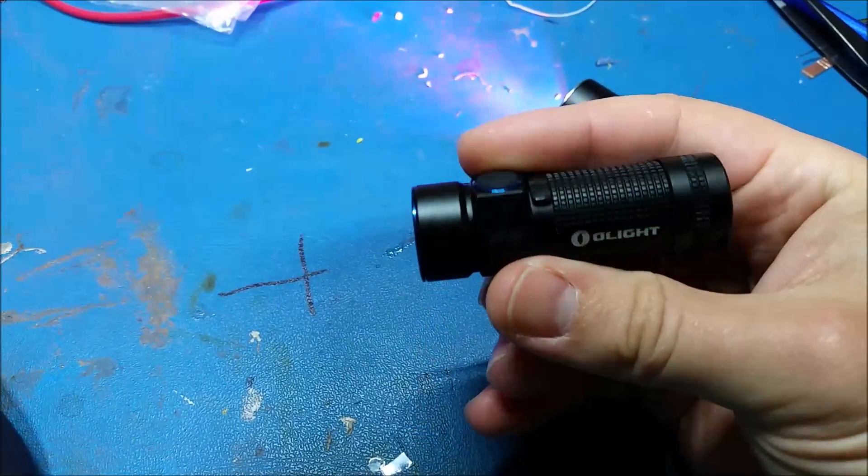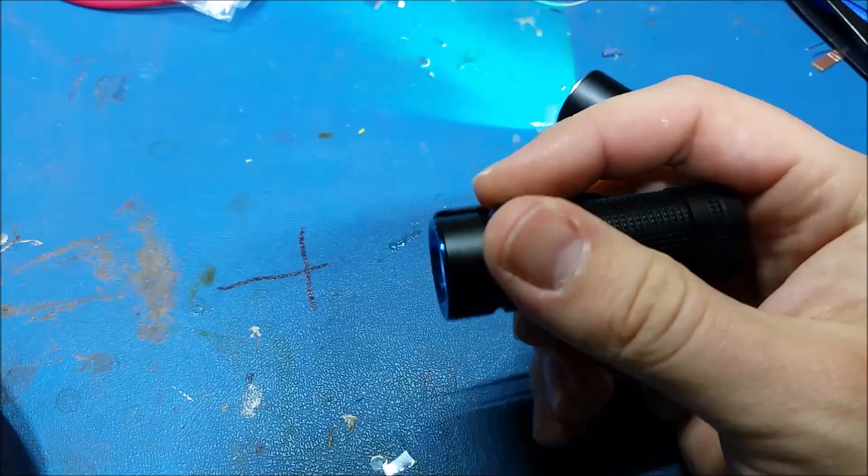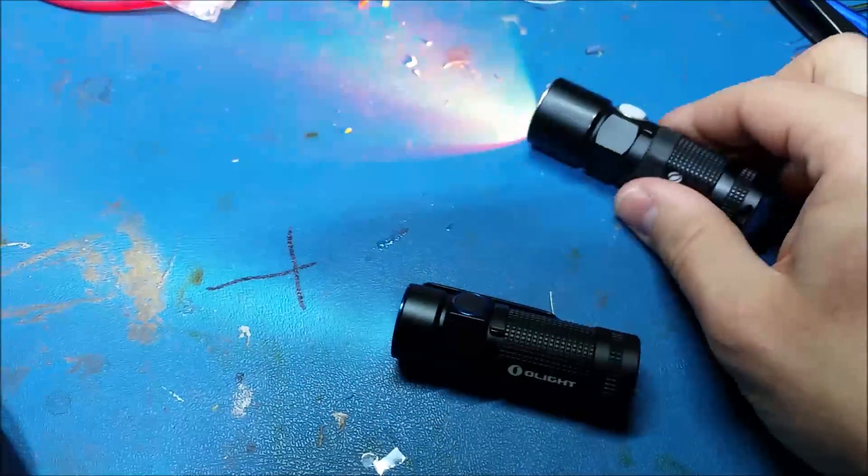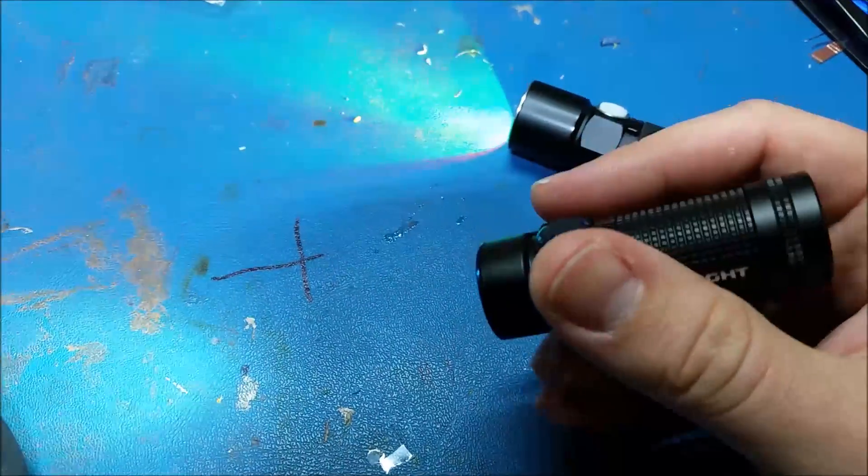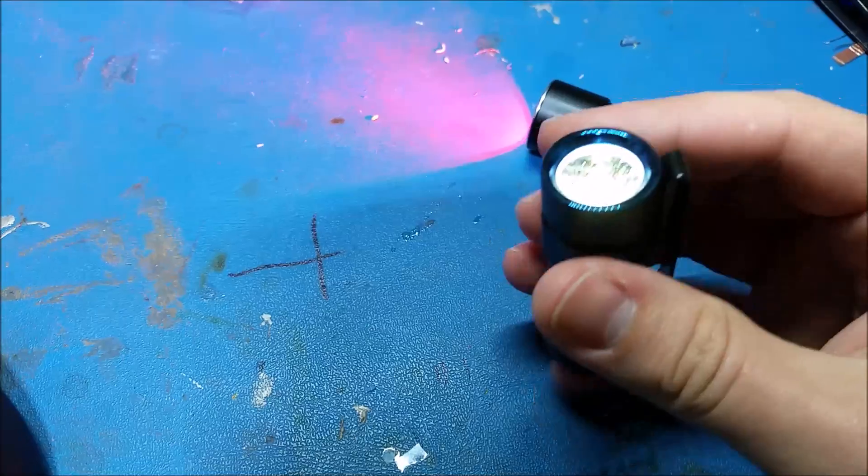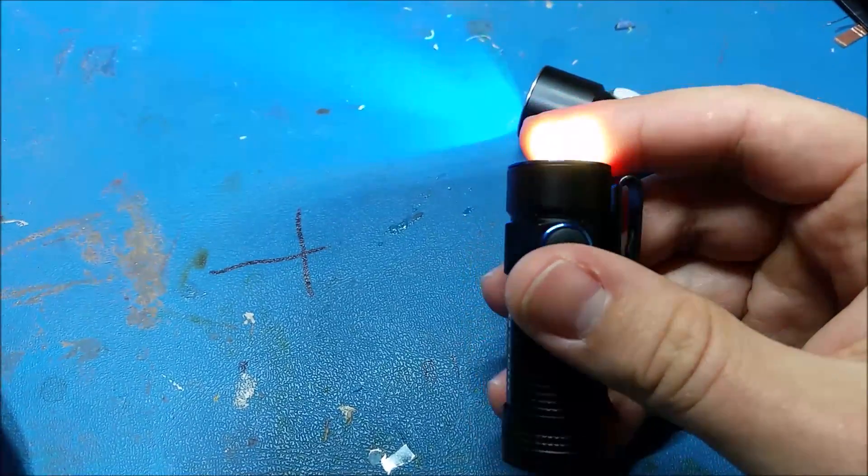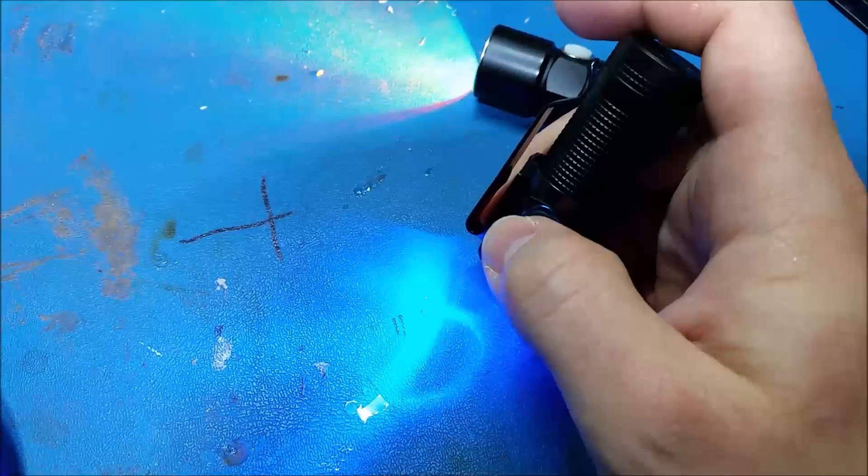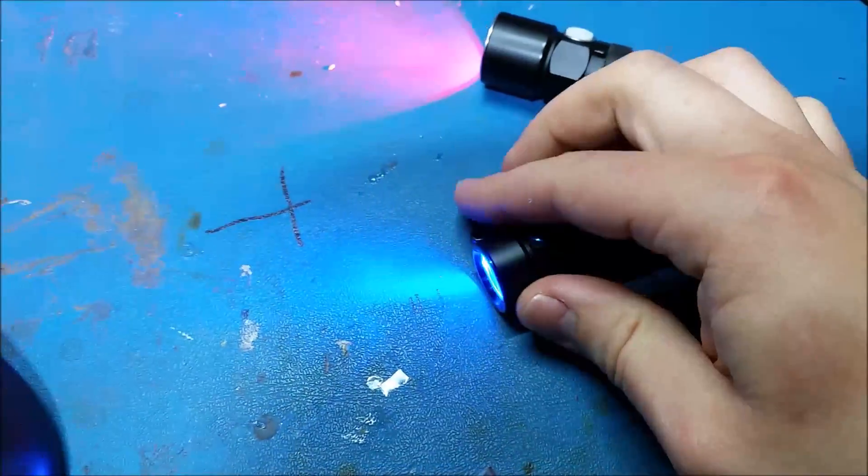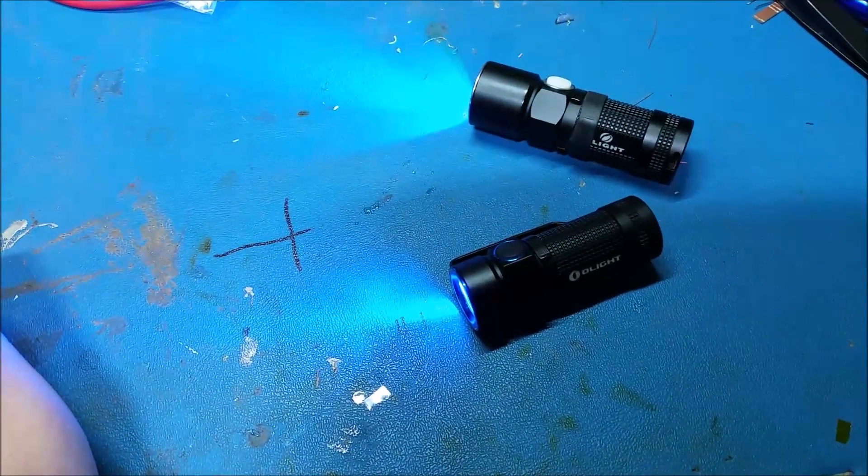Olight recently released this light, the S1 baton. It's a smaller version of the S10. I recently got one and challenged myself to modify it to RGBWUV. The color beam patterns are awful, as expected, but the white is as good as the stock configuration.